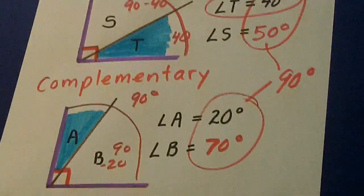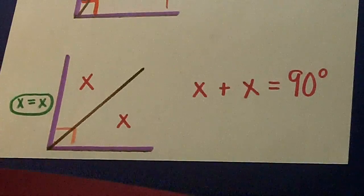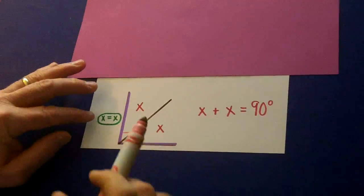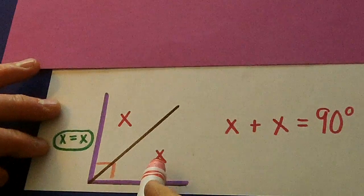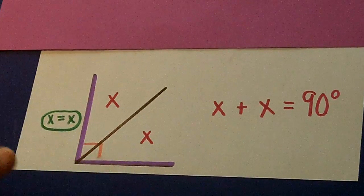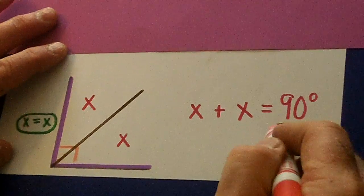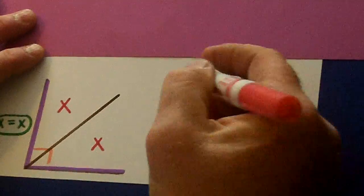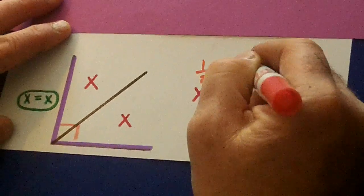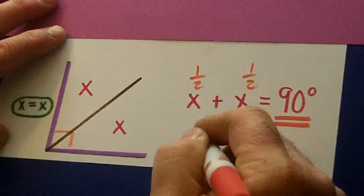Let's look down here. Here we have two complementary angles. The X and the X mean they are the same. Two angles that are the same that equal 90 degrees. That probably means that these are both half of 90. And what's half of 90?